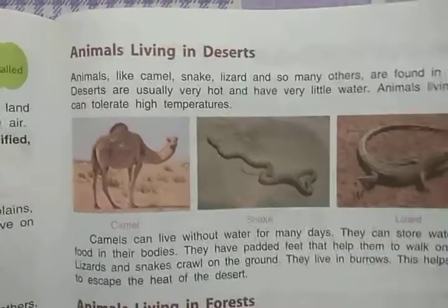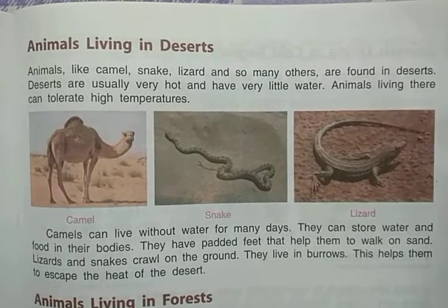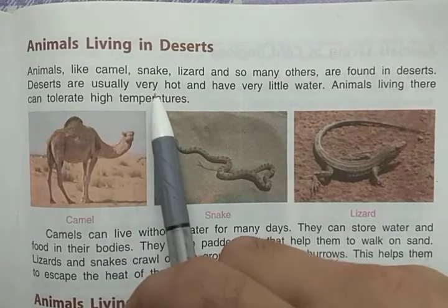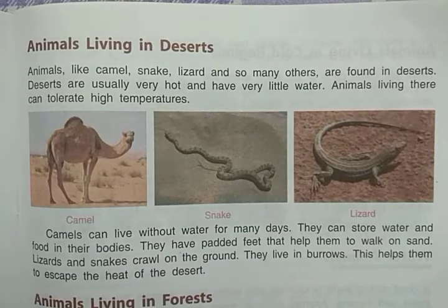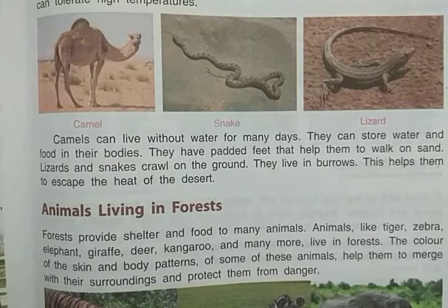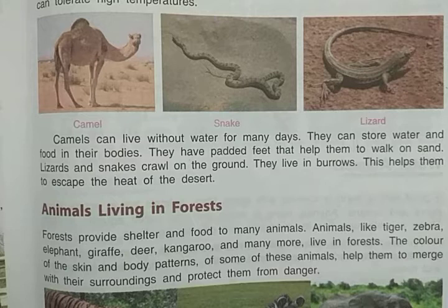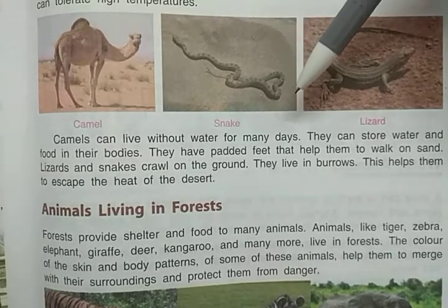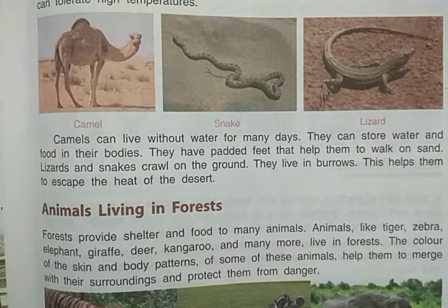Now we are revising the animals living in desert. Deserts are usually very hot and have very little water, so it is very difficult to survive in desert areas. As the temperature is very high, animals living there can tolerate high temperatures. We also revised the special features of camels — camels can live without water for many days, which is very important because there is a scarcity of water in desert areas, and they can store water and food in their bodies.